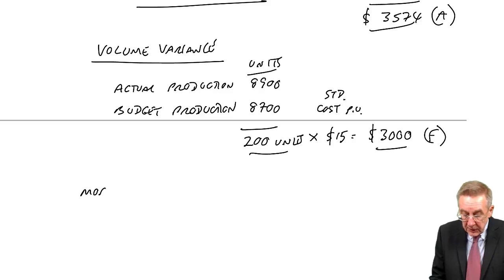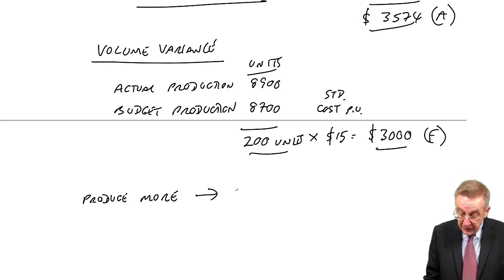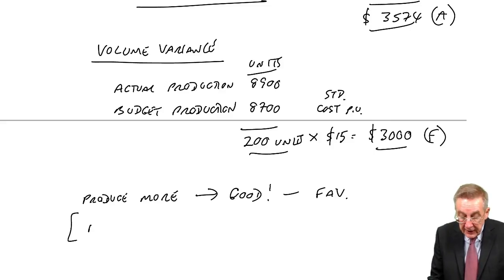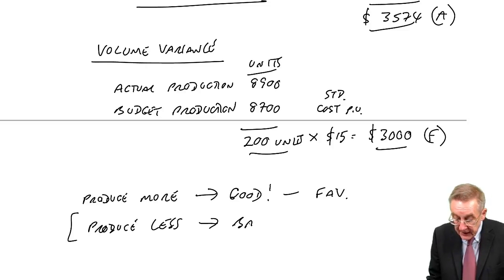I say, we've produced more. I say, if we produce more, that's good. And therefore, the variance is favourable. Whereas, if we'd produced less, I say, producing less is bad, and it would be adverse.